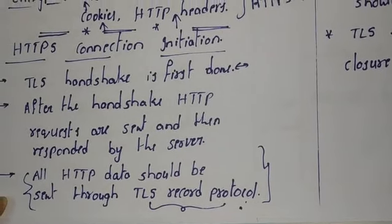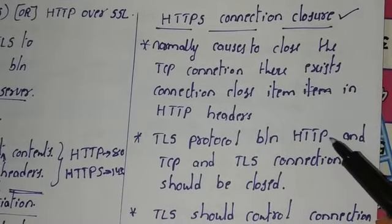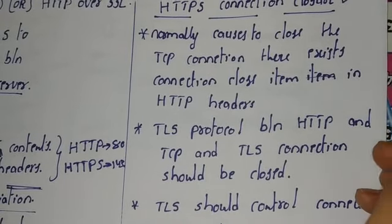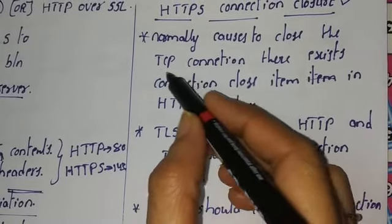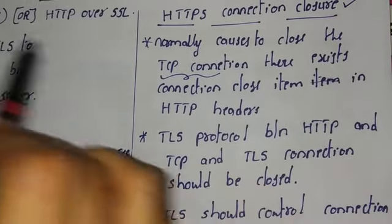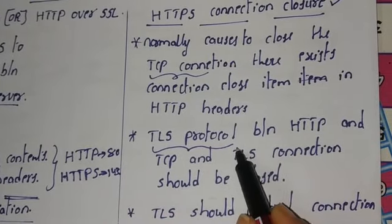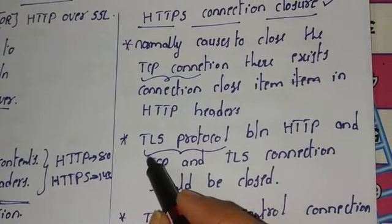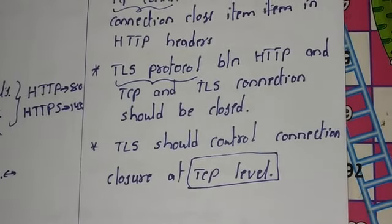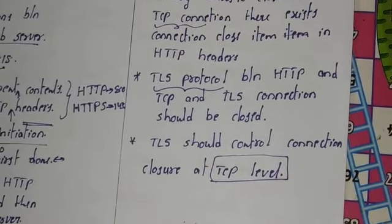For HTTP connection closure, the connection-close item exists in HTTP headers. Normally in HTTP, the TCP connection handles closure. However, in HTTPS, the TLS protocol is used for connection closure, since TLS is implemented at the transport layer. TLS controls the connection closure at the TCP level. This completes the first part of this unit.